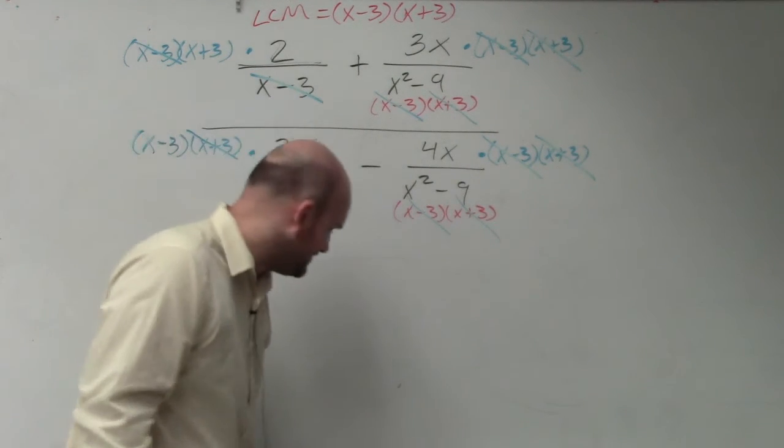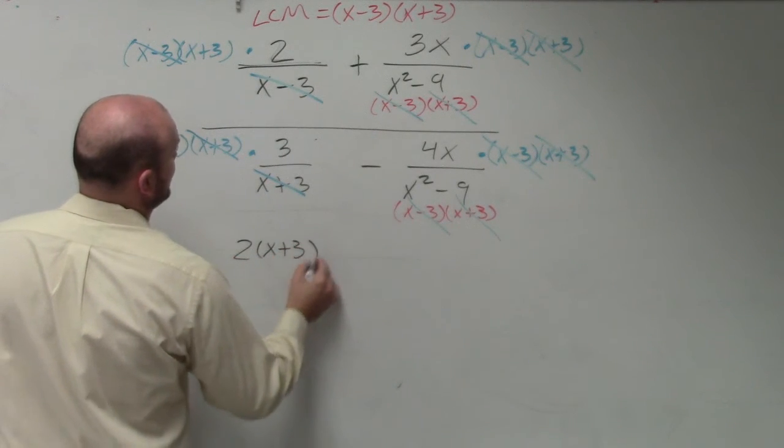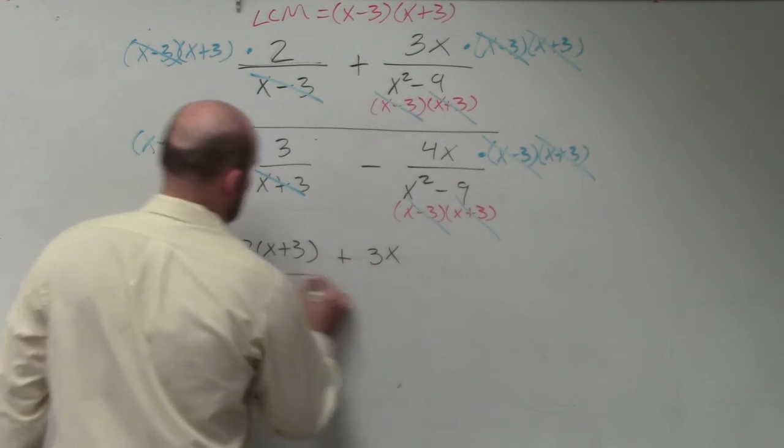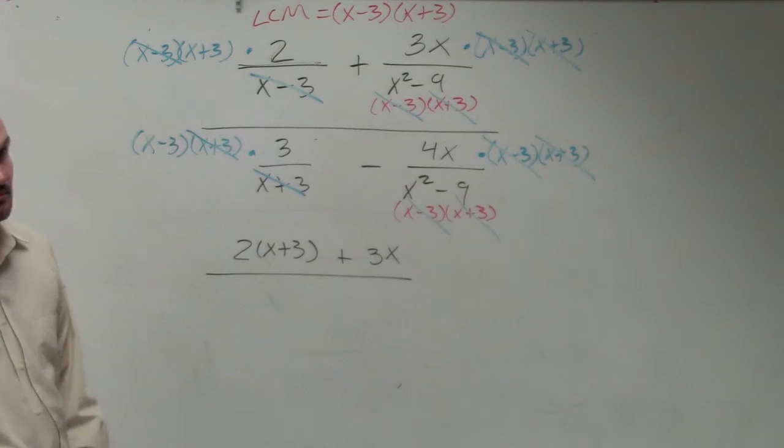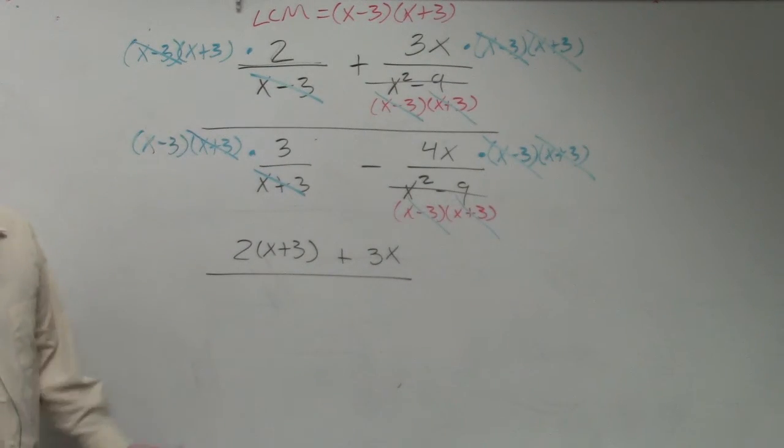Let's clean up and see what we have left over. I have 2 times x plus 3 plus 3x. That's left in the numerator, right? Because I factored those out. That's all I got left.